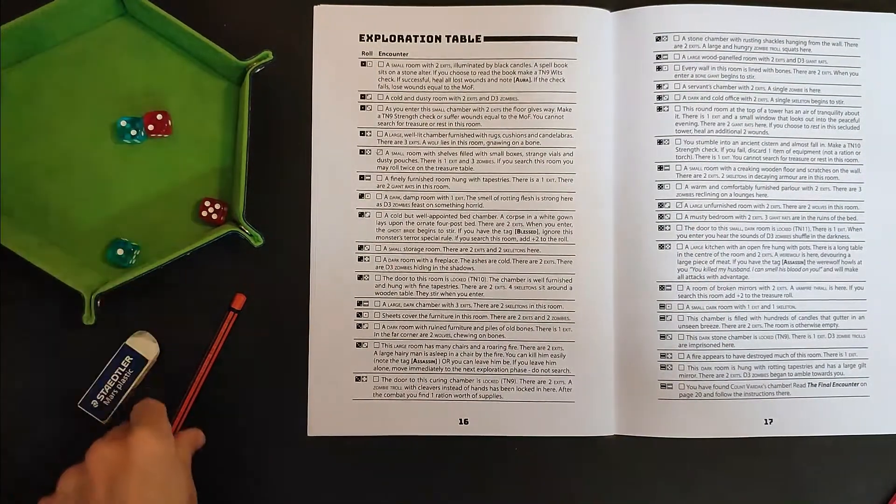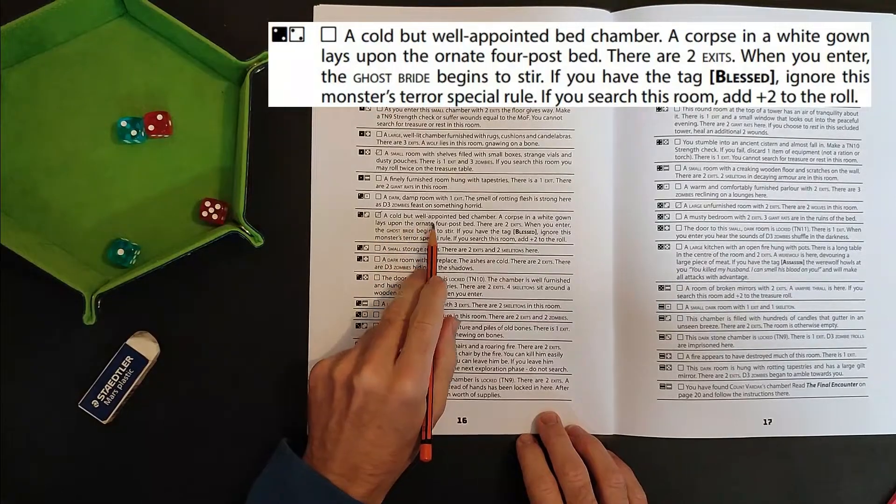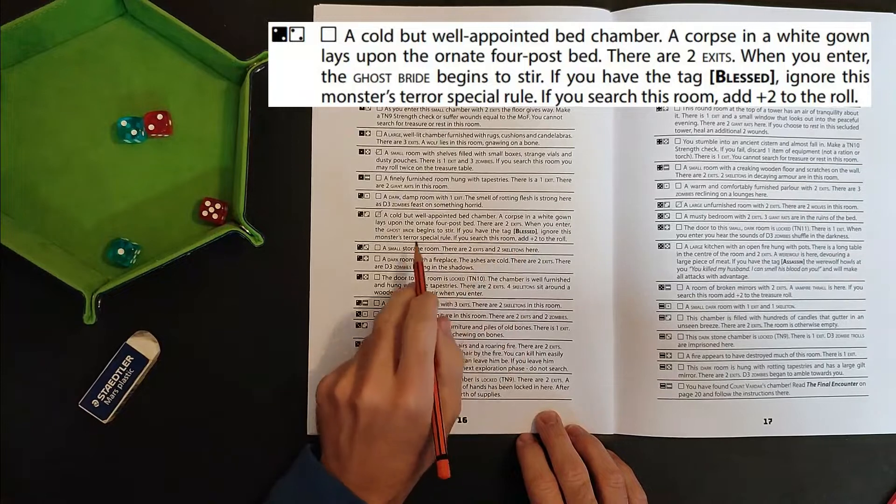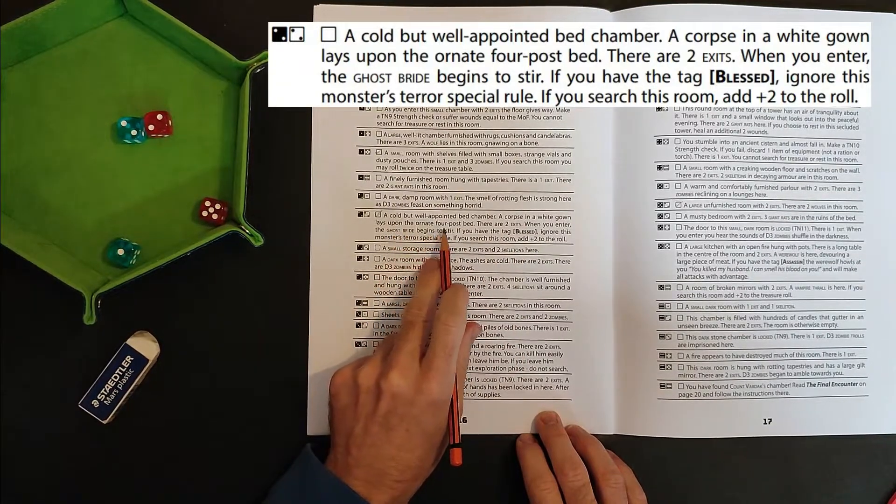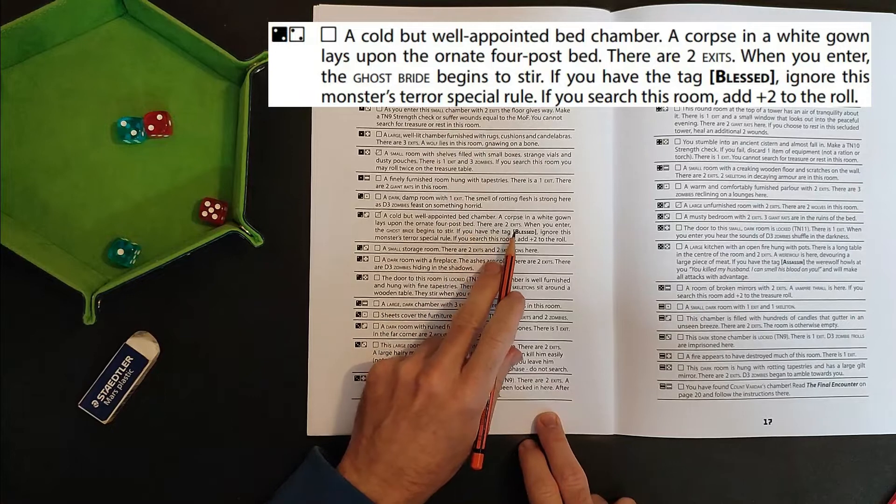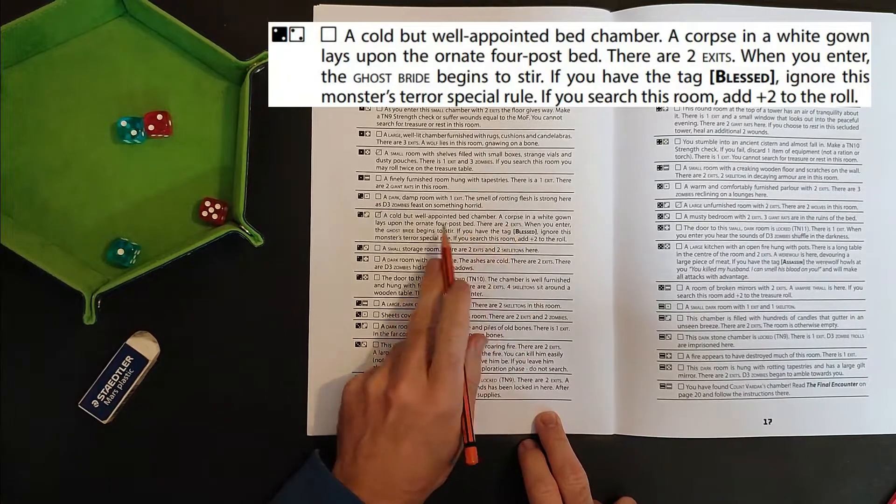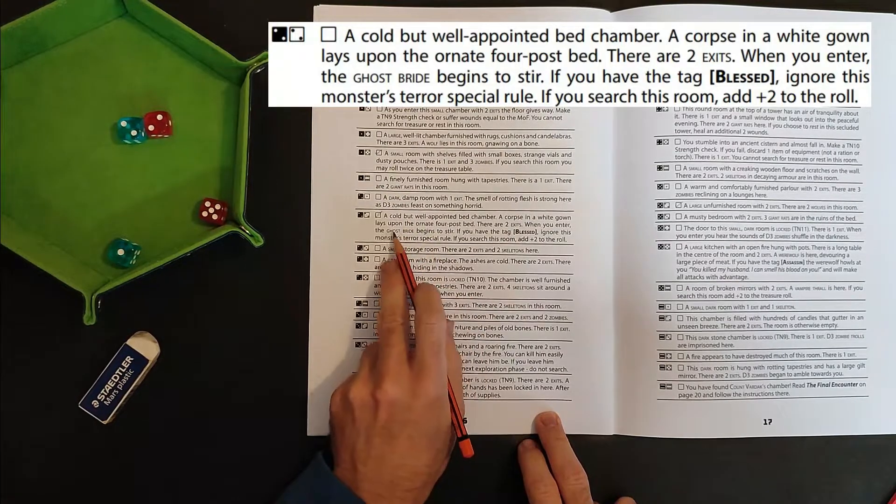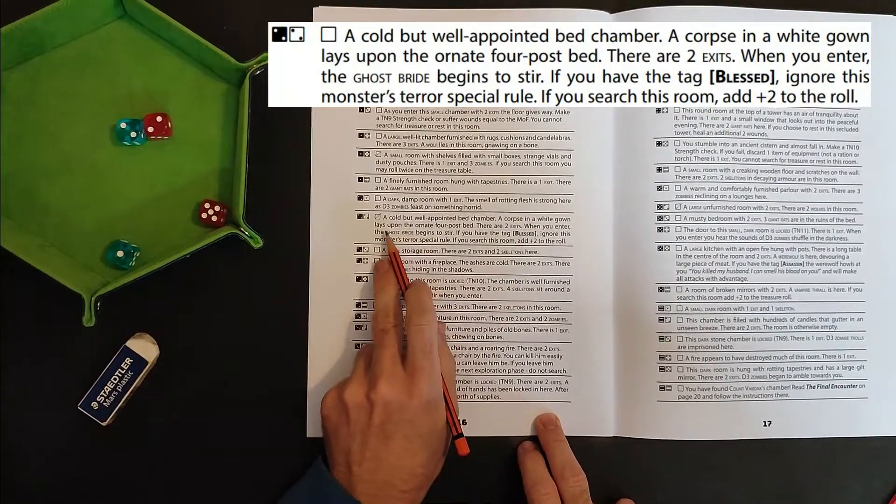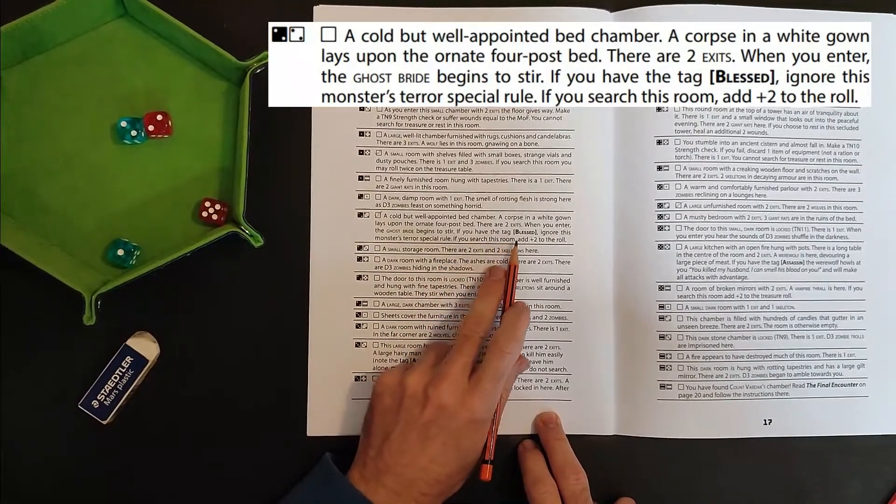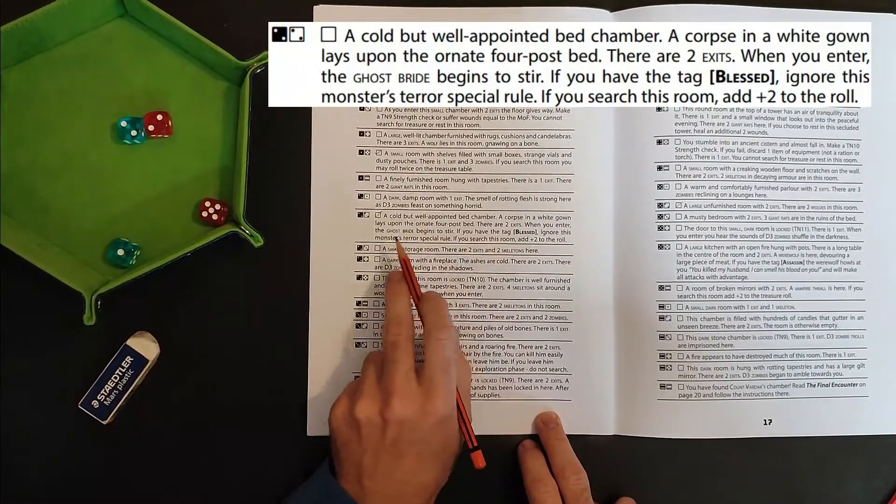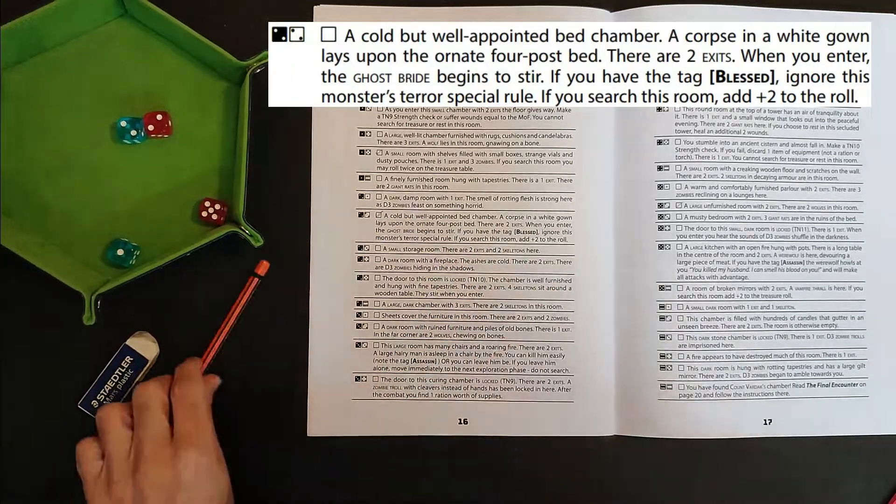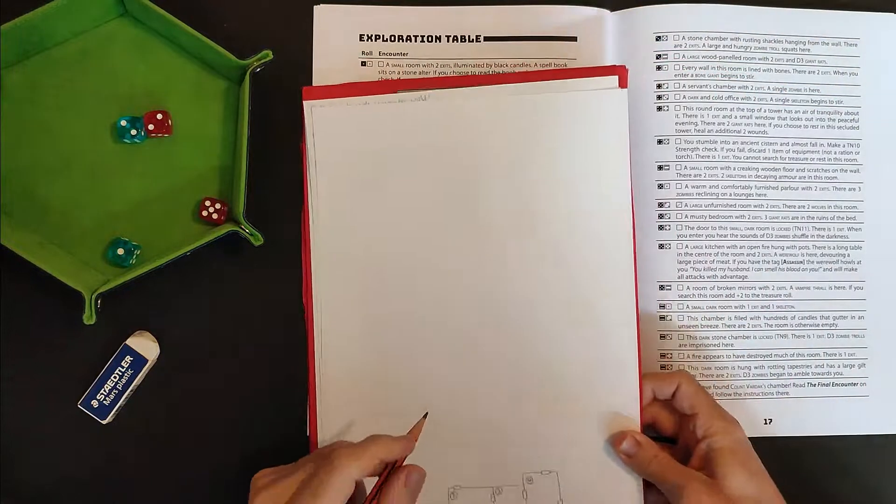22. A cold but well-appointed bedchamber. A corpse in a white gown lays upon the ornate four-post bed. There are two exits. When you enter, the ghost bride begins to stir. Oh, is that a special kind of enemy we have to fight? If you have the tag blessed, which we don't, ignore this monster's terror rule. If you search the room, add two to the roll. So first thing to do is to draw the room.